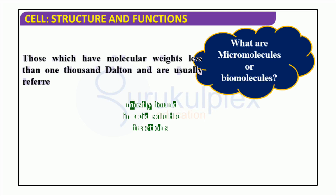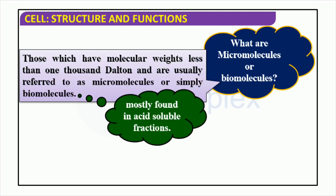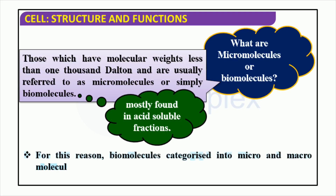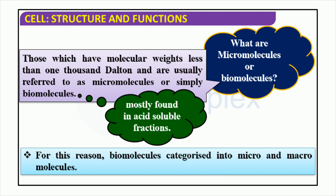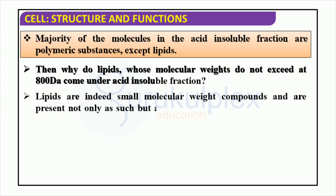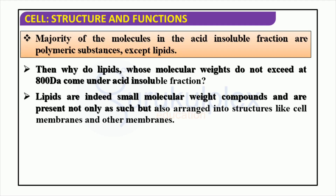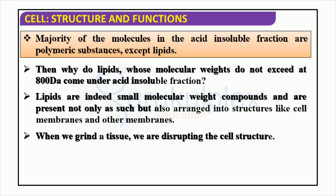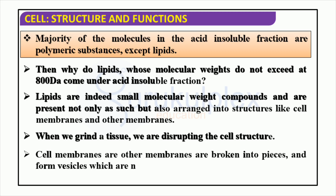Biomolecules with molecular weights below 1,000 daltons are mostly found in acid-soluble fractions. Carbohydrates, amino acids, lipids, vitamins, and hormones are some of them and they are essential for cell maintenance and growth, having an important role in the overall functioning of our bodies. Lipids are a unique type of molecule found in the acid-insoluble fraction. Even though they are relatively small molecules, they can form structures such as cell membranes. When these types of tissues are ground up, it leads to disruption of the membrane structures, making the lipids easily soluble in acid. This feature makes them stand out from other polymeric substances. Investigating how lipids behave in the acid-insoluble fraction gives us a better understanding of the intricacy of biomolecules.